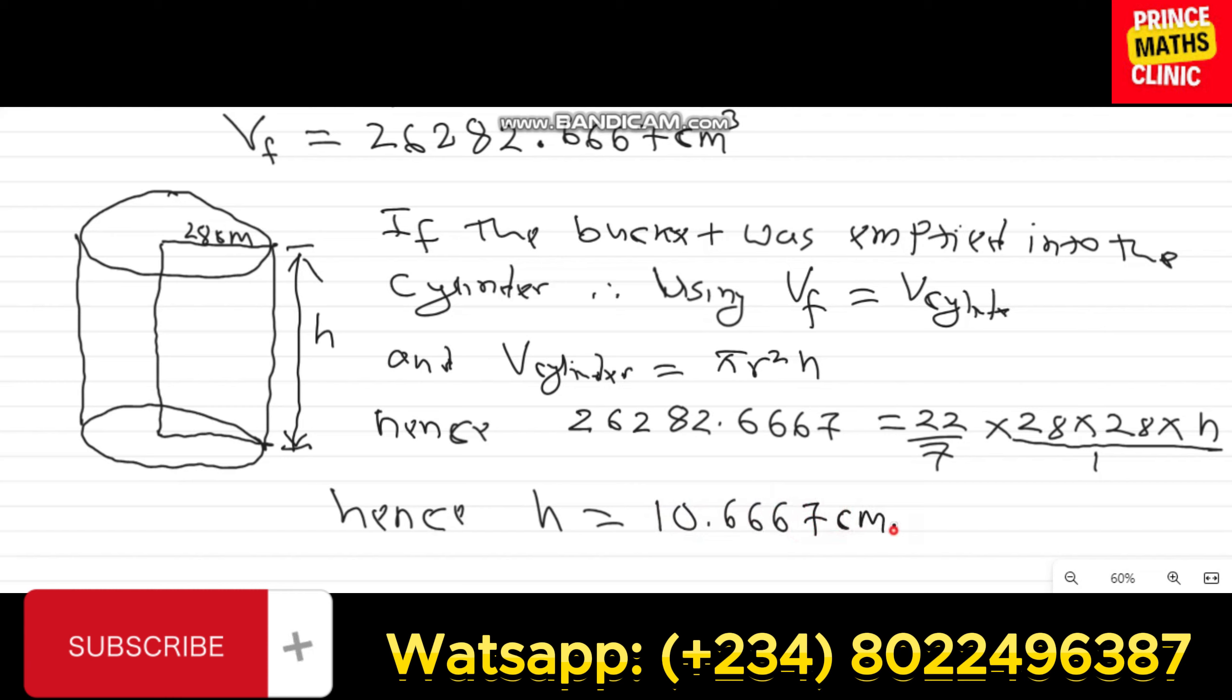We are going to find H to be 10.6667 centimeters, which we can approximate to the nearest whole number as 11 centimeter. So this is the nearest whole number.